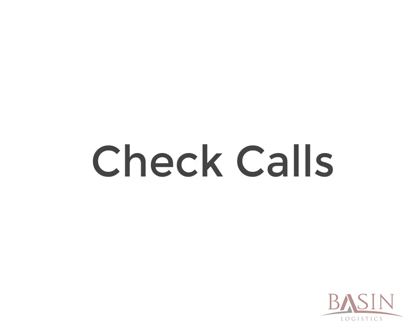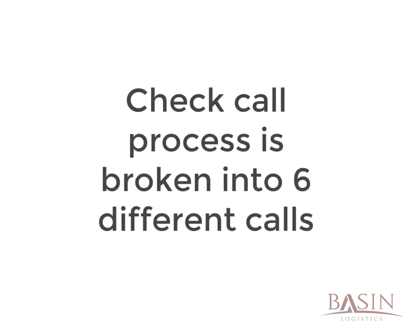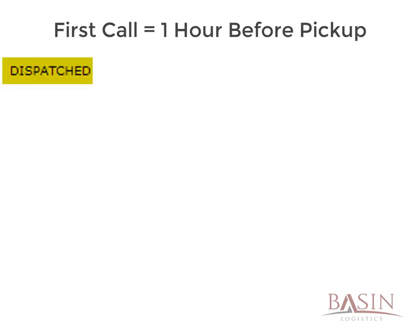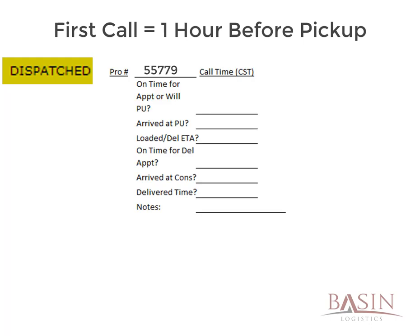Now that you have collected all of the pertinent information, you can start making your check calls. The check call process can be broken down into six different calls. The first check call you should make is before pickup and is made one hour prior to the pickup appointment time. Based on the example we are outlining for you, you should call Jim at 2 PM Central Standard Time to verify that he will be on time for the 4 PM Eastern Standard Time pickup.